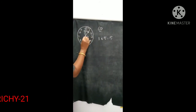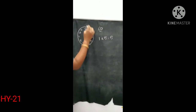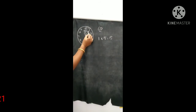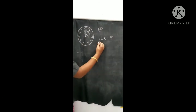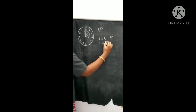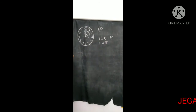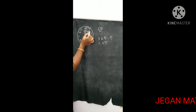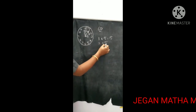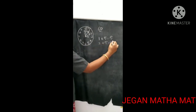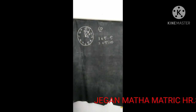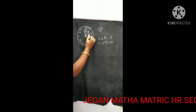Then the minute hand moves to 2. The minute hand has moved to 2, so I have to calculate 2 multiplied by 5. Because there are 5 divisions, and we want to add more of 5 divisions. So 2 multiplied by 5 — 2 fives are 10. So 10 minutes. The time is 3 hours and 10 minutes.